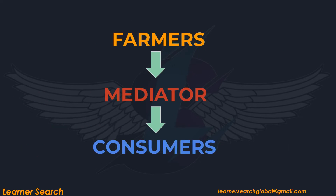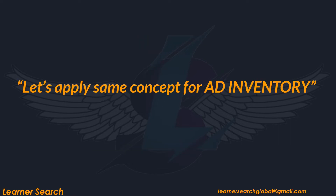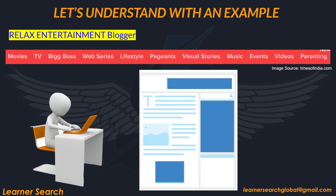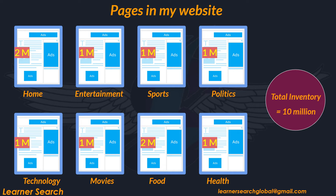Even here, a mediator is required to run the business effectively on both sides of the ecosystem. Let's apply the same concept to ad inventory. Let's assume you are a publisher managing a website with a number of different category pages, and each page gets millions of monthly impressions — for example, 2 million for homepage, 1 million for entertainment, 1 million for politics, and so on. In total, the ad inventory generated per month through this website is 10 million impressions.